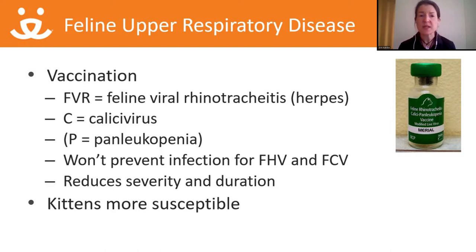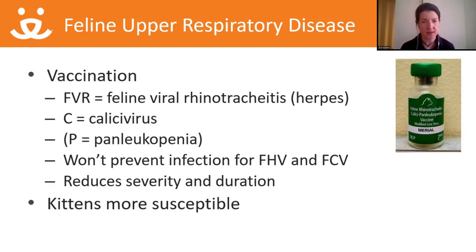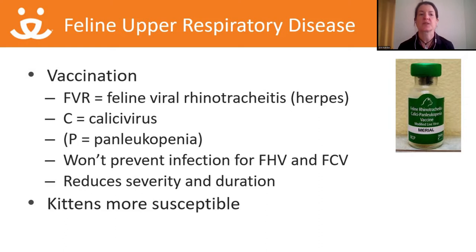Kittens are more susceptible even with vaccines on board. They have undeveloped immune systems, and we have to worry about maternal antibodies that interfere with our vaccines, giving only variable efficacy. Those antibodies from mom are protective to a degree but wane over time, and we never know when they go away. No matter how many vaccines or boosters a kitten has had, they aren't considered protected until older than four to five months of age — that goes for panleukopenia as well.